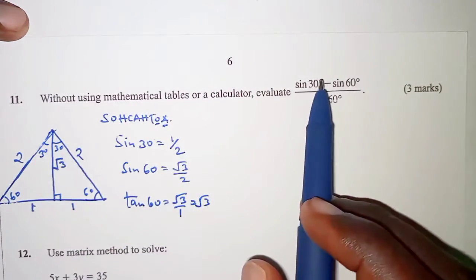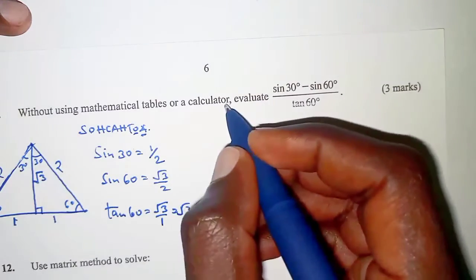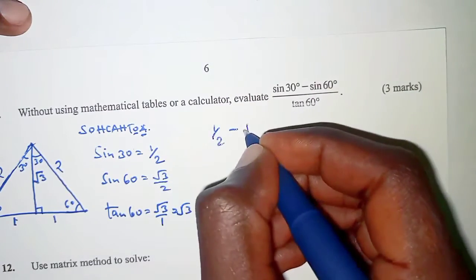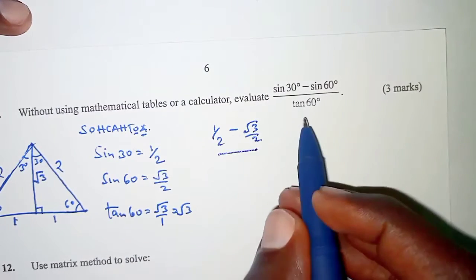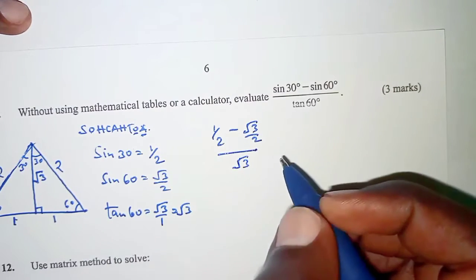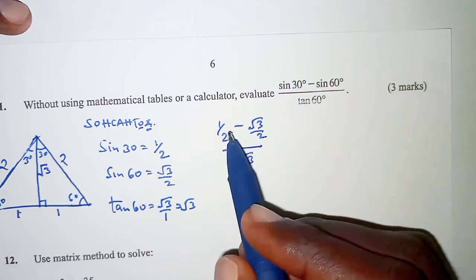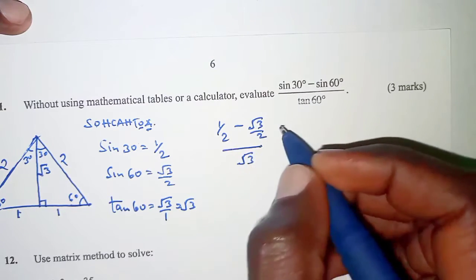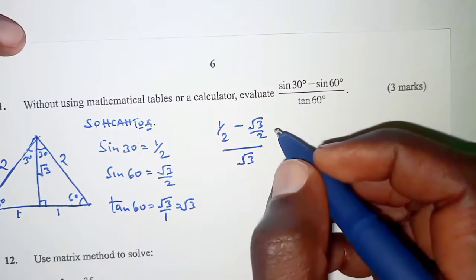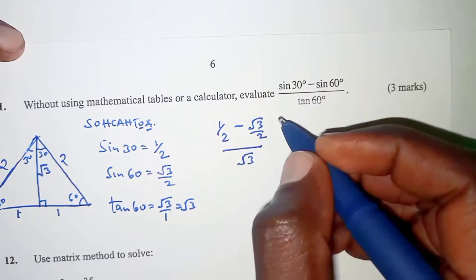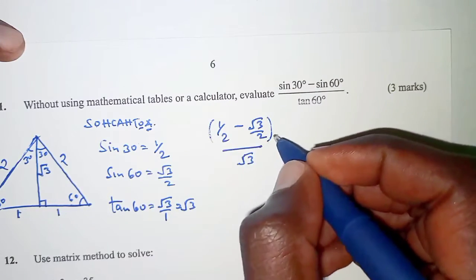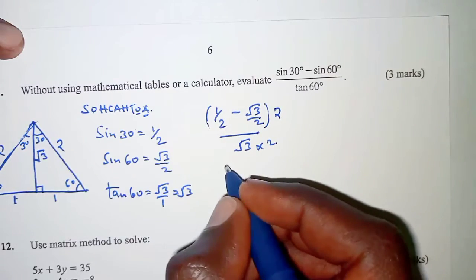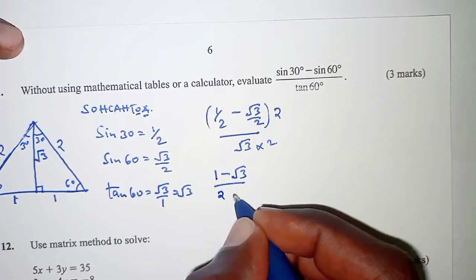Substituting these values in the problem, we will have: instead of sine 30, we have a half, minus sine 60 which is root 3 over 2, all over tan 60 which is root 3. When we have to deal with fractions, the first step is to eliminate the fractions on the numerator by multiplying the numerator and denominator by the LCM, which is 2. Our new fraction becomes 1 minus root 3, all over 2 root 3.